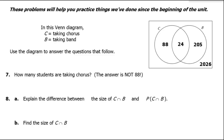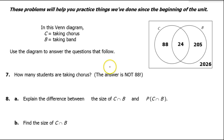In this video, we will practice calculating probability using a Venn diagram. We will do the probability of C and B, the probability of C or B, we might do the probability of C given B, and the probability of C and not B.